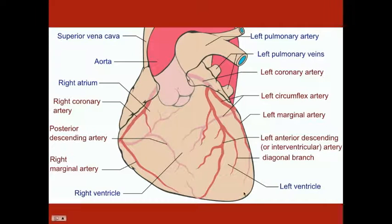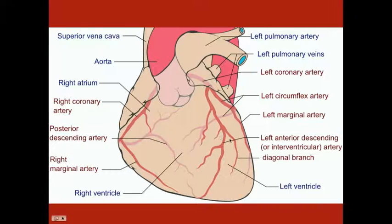The big one is the left anterior descending artery (LAD), which is the artery most often affected when somebody has the massive heart attack they die from suddenly. This is also an artery you can't do angioplasty on — we'll talk about that later. The LAD, also called the interventricular artery, comes off the left coronary artery. There's also a diagonal branch off the left coronary artery. Those are the seven arteries you'd want to know above all others.